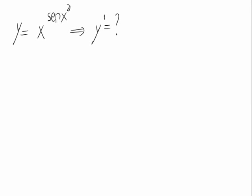Given the function y equals x raised to the sine of x squared, let's calculate its derivative. We see that we have a function raised to another function, so to calculate this derivative, we have to apply logarithms to both parts of the equation.